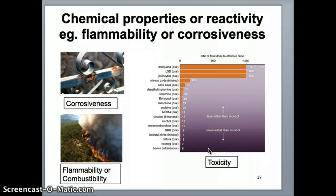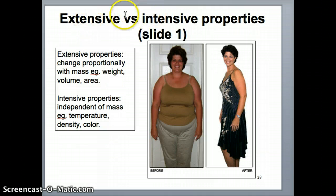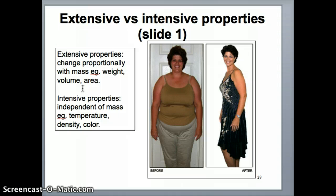Toxicity refers to a reaction with another specific molecule. Now, one way to look at properties of a substance is to define it as a physical versus chemical property. But another way is to think about extensive versus intensive property. An extensive property is a property that changes its value proportionally to the amount of mass that you have. Mass is important because we're studying matter, and matter by definition contains mass. So we want to know: is a specific property changing as a function of mass?